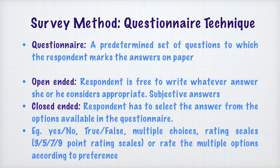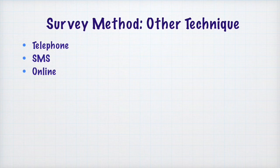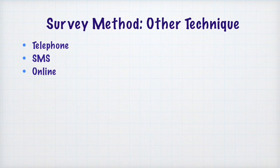Apart from interviews and questionnaires, we can also use other techniques to gather data in a survey. We can use telephone surveys, where telephone is used to ask questions and gather information. We can use SMS, where respondents reply back by SMS. These days we also have online surveys, where Google Forms can be sent to people to gather information or opinions. These are some additional techniques used to gather data in a survey.